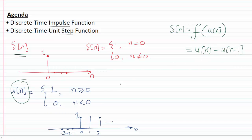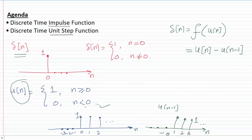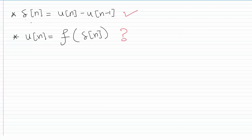Well, there is, and it is: u of n minus u of n minus one. To check if it's true — we already have u of n plotted. If I ask you to plot u of n minus one, it's going to start from one, because u of n minus one is nothing but u of n shifted to the right by one sample. If I take u of n minus one out of u of n, all I'm left with is the sample at zero, which is nothing but an impulse function. So we have proved that we can write the impulse as a function of the unit step.